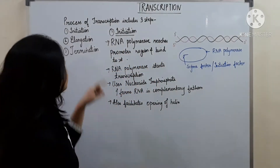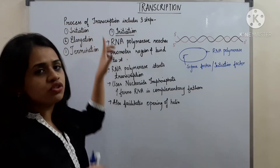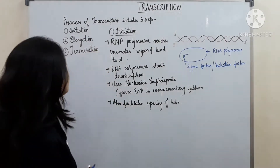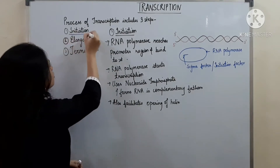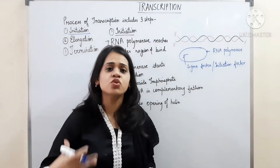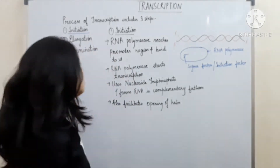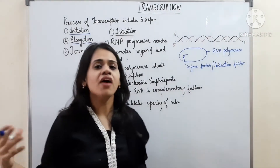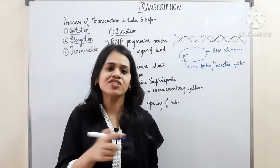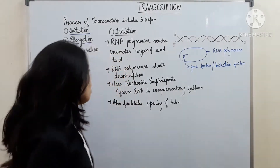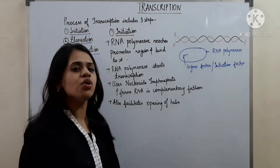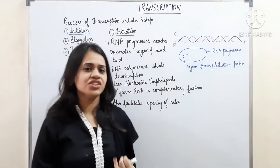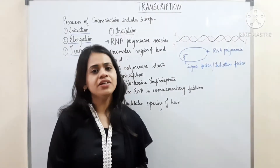We are going to start today with the process of transcription. The process of transcription includes 3 steps. The first one is called initiation, where the process gets started. The second one is called elongation, where the length of RNA will increase. And the third one is termination, where the process ends. So the 3 steps are: initiation, elongation, and termination.